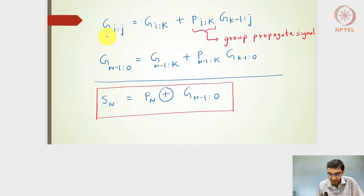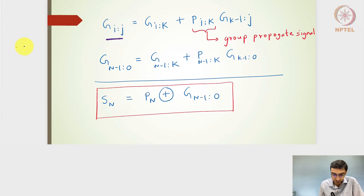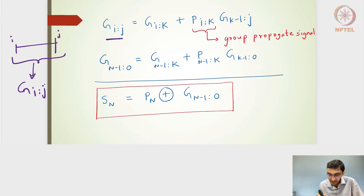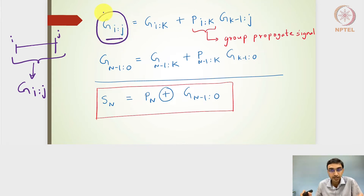The group generate signal G(i,j) has i as the MSB bit and j as the LSB bit. So if I have a group of bits, I can generate a group generate signal — the whole group of bits should be able to generate a G signal, or generate signal.